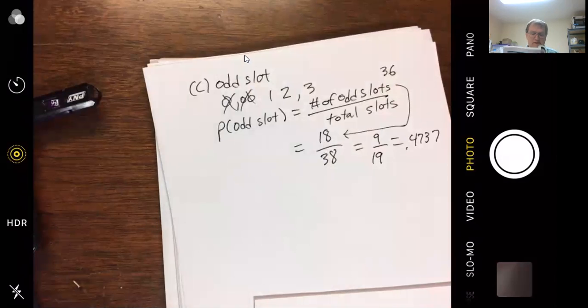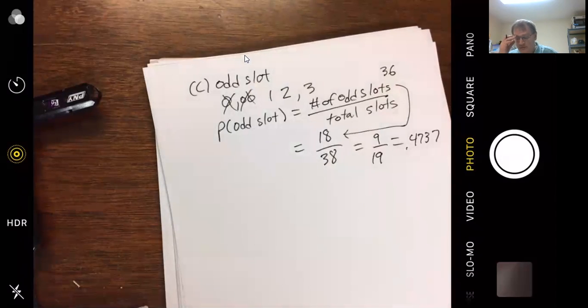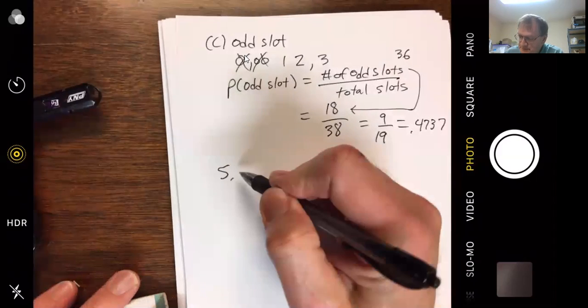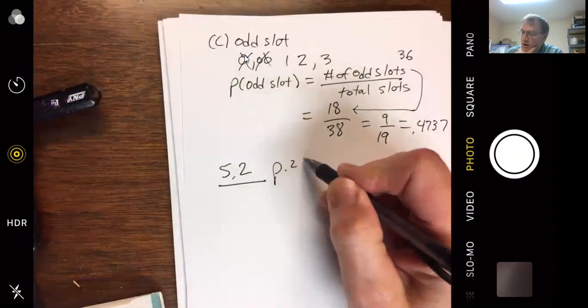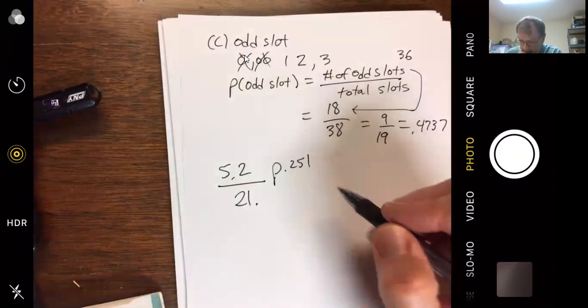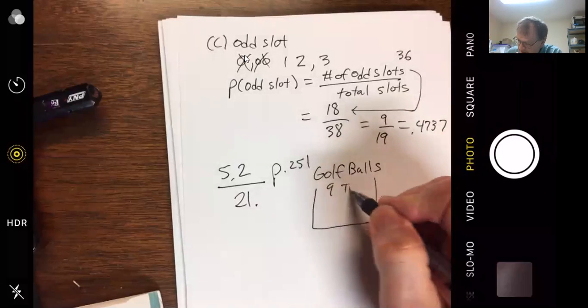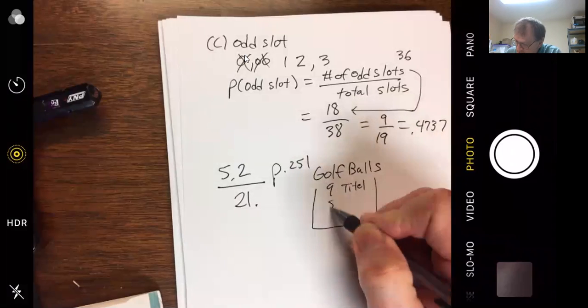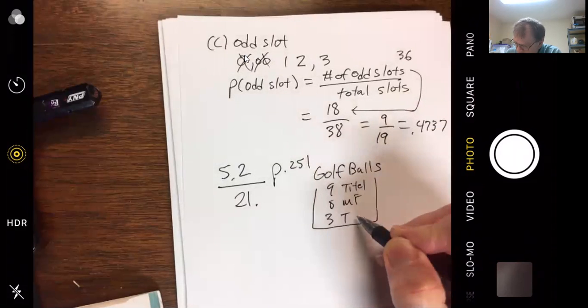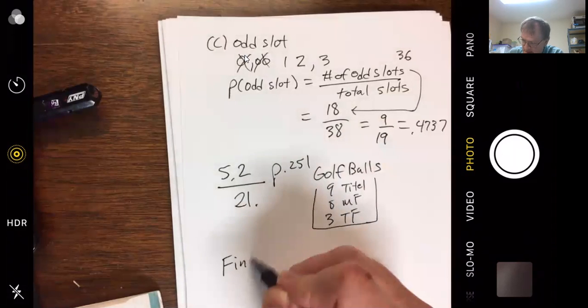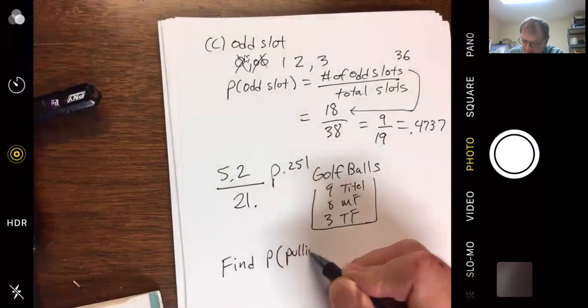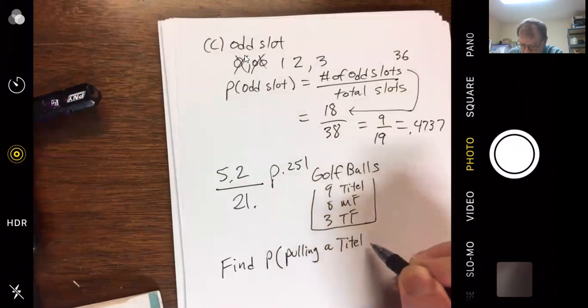Can we go on to 5.2? Yes, sir. Okay. That's where we hit a few more formulas, this general addition rule and then a complement. 5.2. Page 251. How about one like 21? You got golf balls. Just kind of picture they put them in a bag or a box. You got 9 Titleists. You got 8 Max Flees and you got 3 Top Flights. 21, find probability pulling a Titleist or Max Flea.